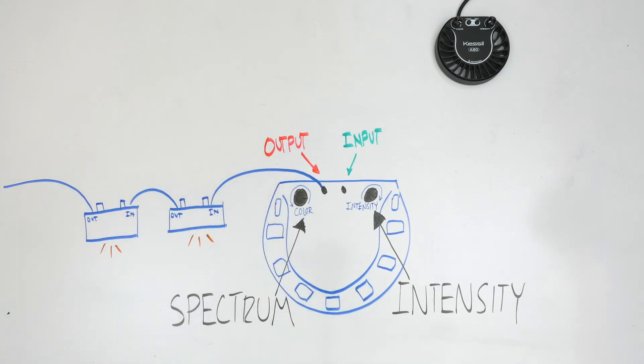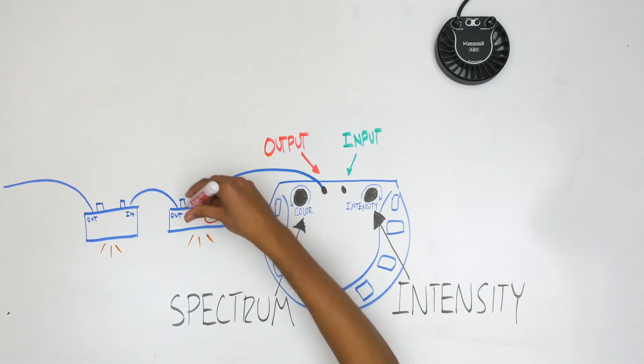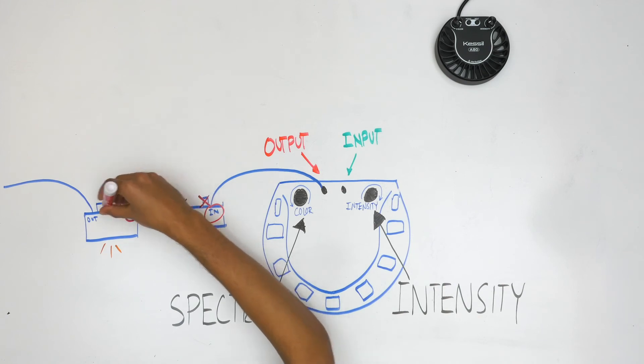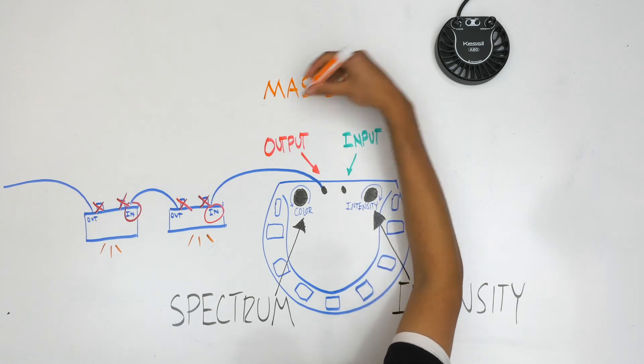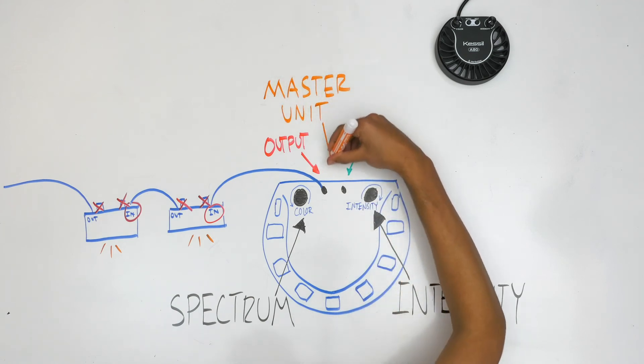When daisy chained in a series, the first light acts as the master unit, because once you plug a cable into the input jack, the manual controls for that particular fixture stop working. So, any adjustments made to the first light in the series will be made to all subsequent linked units as well.